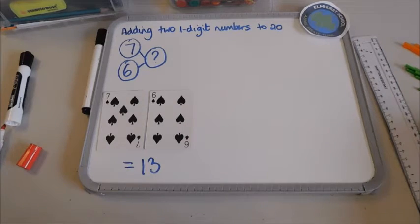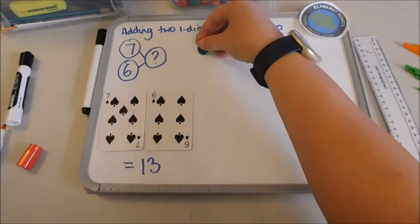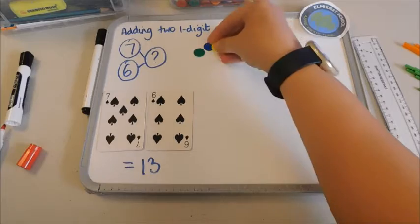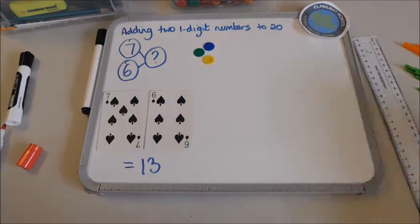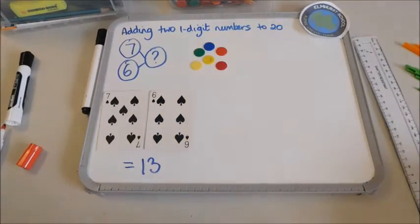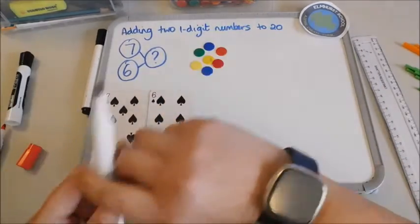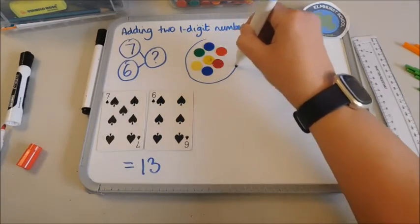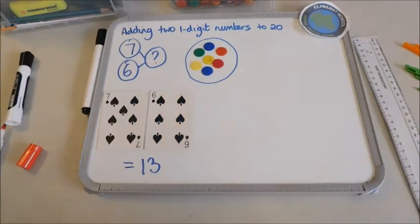Now one of the things that we use a lot in school is we use counters. So we'll get my seven counters: one, two, three, four, five, six, seven. That is one number, and now I need my six.